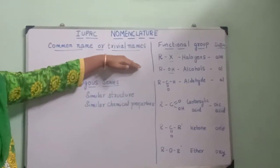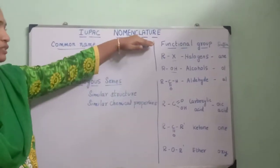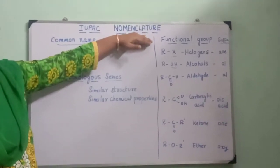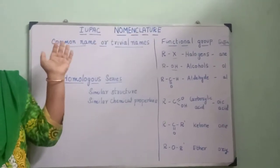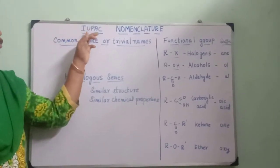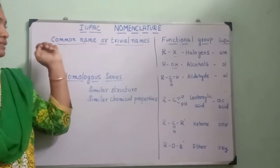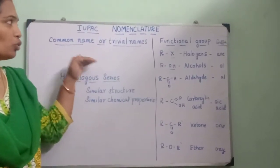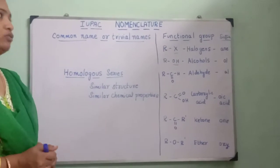Our topic is IUPAC nomenclature. Nomenclature means naming an organic compound. IUPAC stands for International Union of Pure and Applied Chemistry, which has given certain rules to be followed when we are going to name an organic compound.